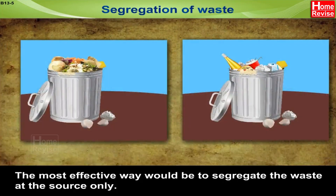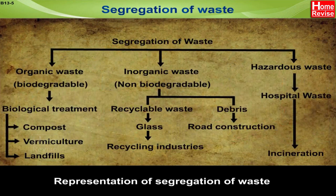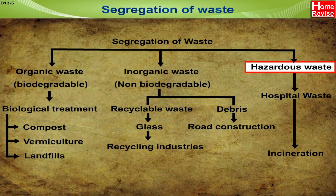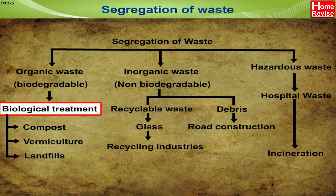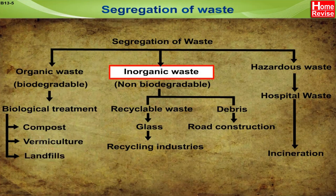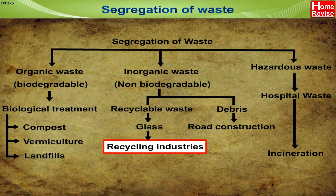The most effective way would be to segregate the waste at the source only. Dry waste and wet waste should be kept in separate bins. Segregation of waste is done in three kinds: organic waste, inorganic waste and hazardous waste. Organic waste, also known as biodegradable waste, undergoes biological treatment which includes composting, vermiculture and landfills. Inorganic waste, also known as non-biodegradable, is of two kinds: recyclable waste and debris. Recyclable waste includes glass, which is recycled in recycling industries, whereas debris is used for road construction.